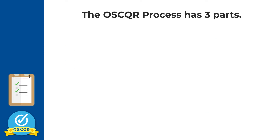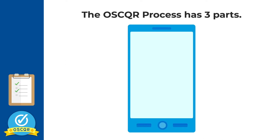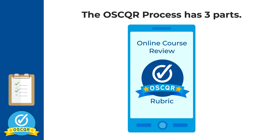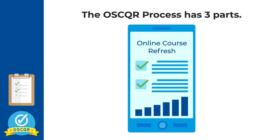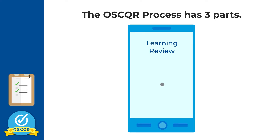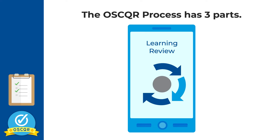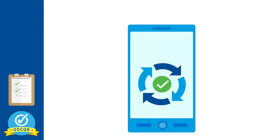There are three parts to the process. The online course review, using the OSCQR rubric, yields an action plan that informs the online course refresh process by targeting areas for improvements. After the identified areas have been refreshed and implemented, the learning review closes the continuous improvement loop to confirm the success of the changes made and the development of a plan for the next set of improvements.